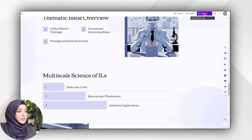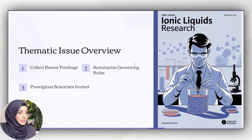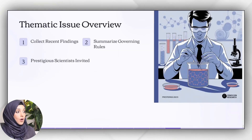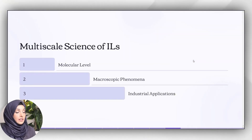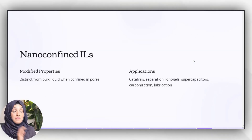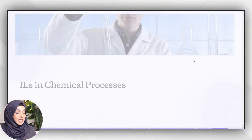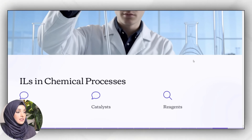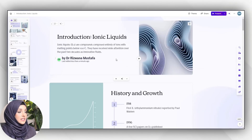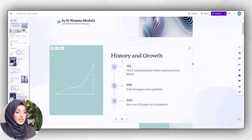I will press the present button and you can see this is the cover page — ionic liquids. Gamma AI created very relevant images for the intro page of my presentation. This is 'multi-scale science of ionic liquids,' this is 'quantum chemical methods,' and you can see the visuals are stunning — generated by AI keeping in view the text included in that specific slide. And as you can see, this is the history and growth graph.